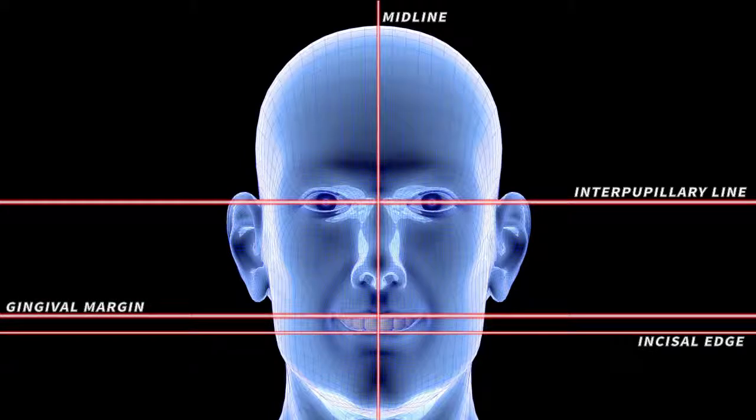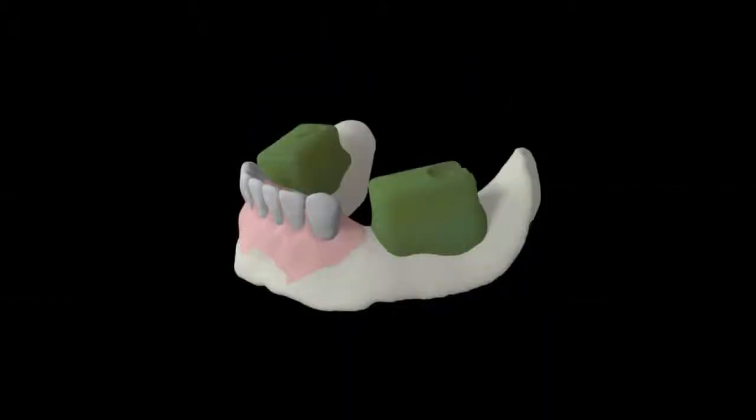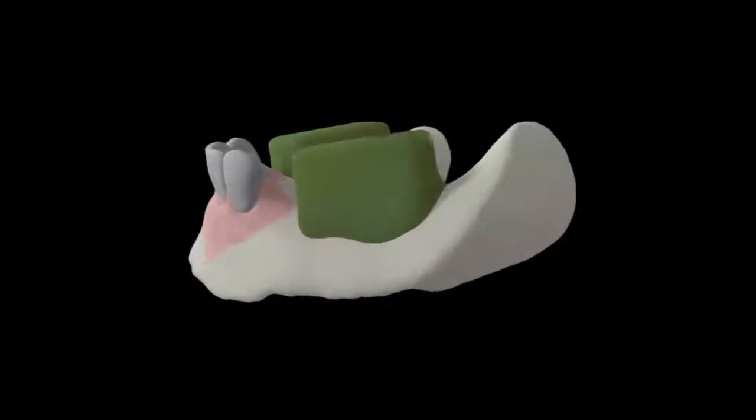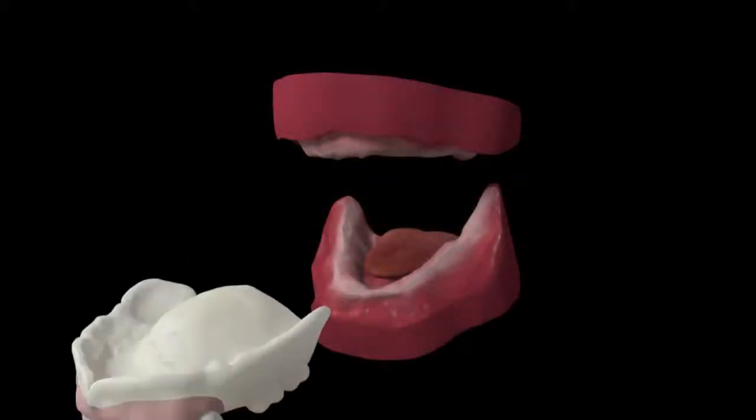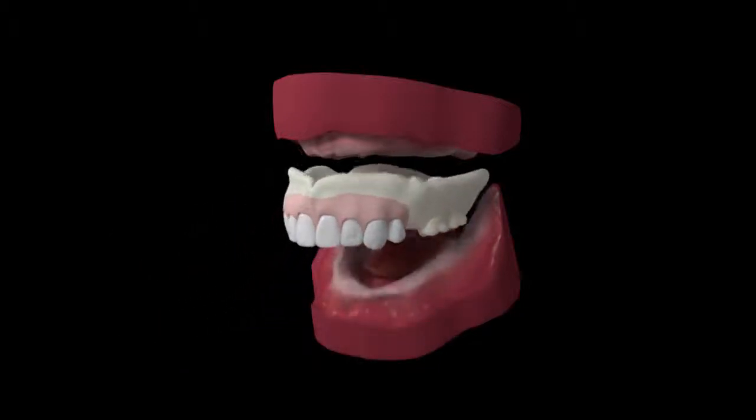The mandibular teeth are moved as a block to establish proper lip support and vertical display of teeth while maintaining the correct overjet and overbite. The position of the maxillary posterior teeth is evaluated and adjusted if required.